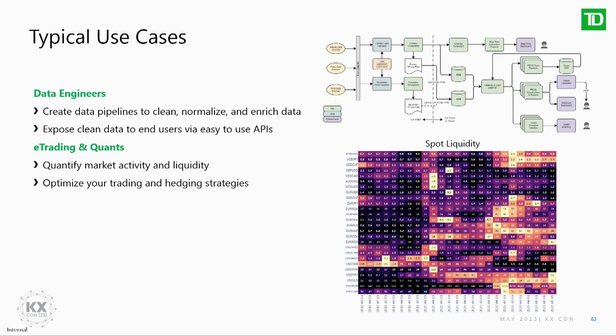The e-trading and quant teams typically take these APIs and do things with them. A relatively straightforward example that resonates very well with our client base is looking at liquidity — in this particular case we're looking at spot liquidity over a period of three or four years, a very large dataset. We're really trying to quantify how liquid the market is and how that changes over time through stressed events like COVID or the recent banking crisis. This helps us understand our trading strategies better — if today is less liquid than before, how much less liquid is it? To do this type of analysis you really do need something like KDB because the dataset is so large.